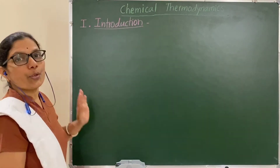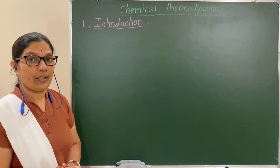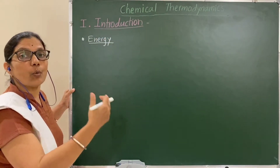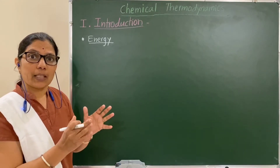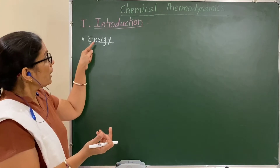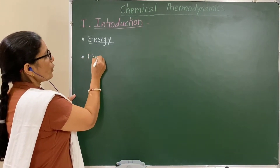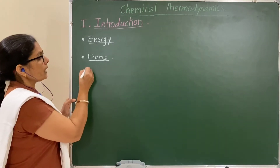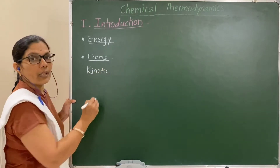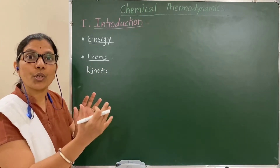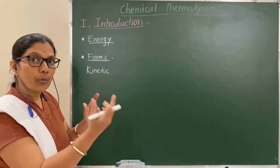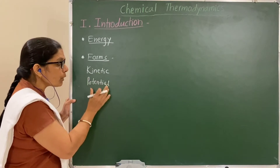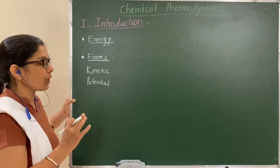Introduction part: energy is a capacity to do work, the ability to perform work. If a substance has more energy, then more work will be done. Now, different forms of energy — first, consider kinetic energy: a substance associated with different motions — vibrational motion, rotational motion, etc. Due to that motion it has kinetic energy. Then potential energy: due to its position or state of that matter, it has potential energy.